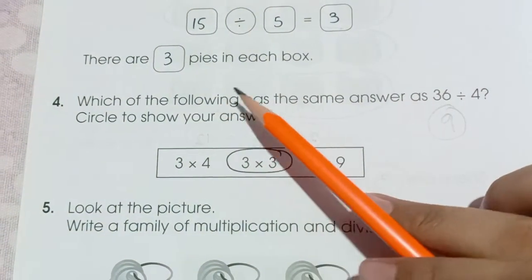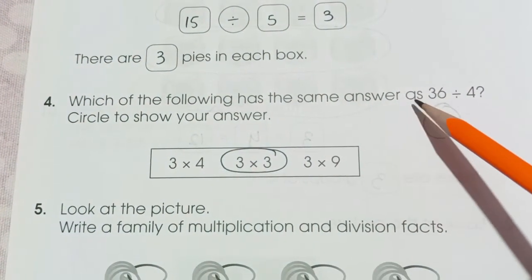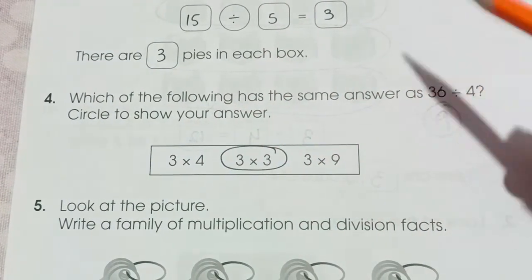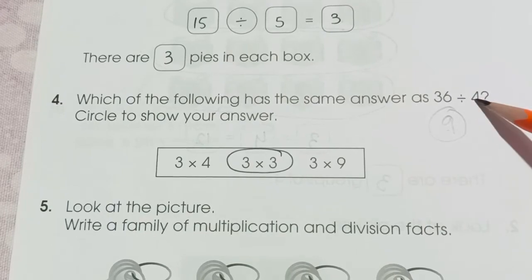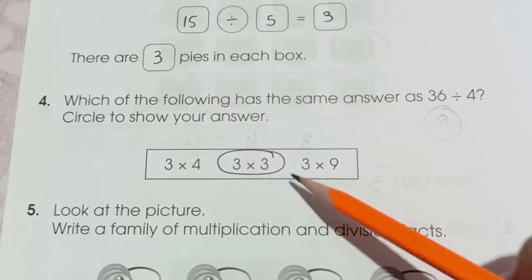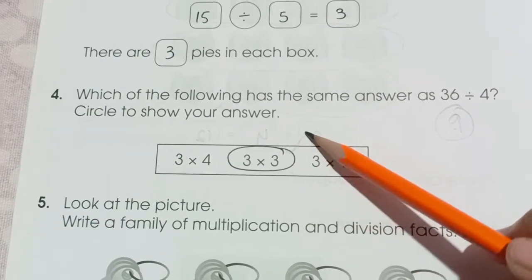Question number 4 is, which of the following has the same answer as 36 divided by 4? Circle to show an answer. So 4 nines are 36. So it means 3 times 3 is 9 is the correct answer.